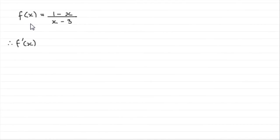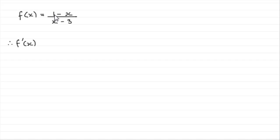In this part of the question, we found out that f of x was equal to 1 minus x over x minus 3 from the first part, and we're asked to find f dash of x — in other words, to find the first differential of f of x with respect to x. To do this, what we've got is two functions of x being divided by one another, so what we need to do is use the quotient rule.